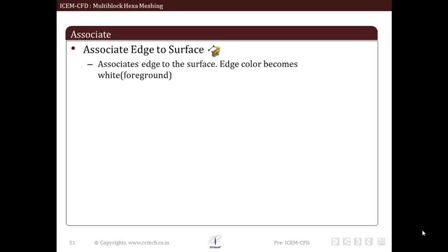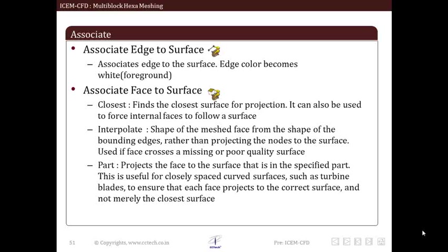Another association method is associate face to surface. This allows us to associate face to surface. There are different options available in ICEM by which we can associate faces to surface as per requirement. First the closest option follows the closest surface for projection. It can also be used to force internal faces to follow a surface.